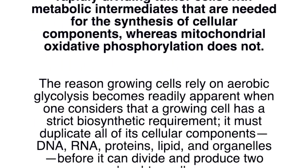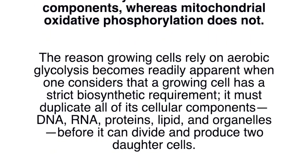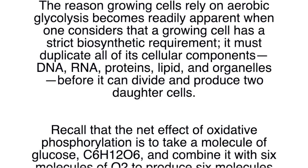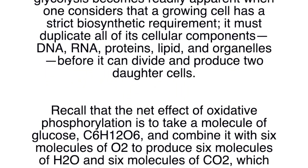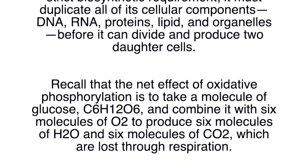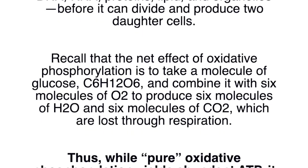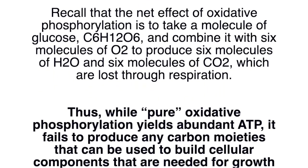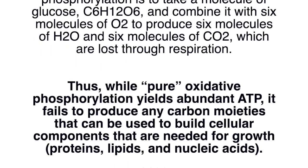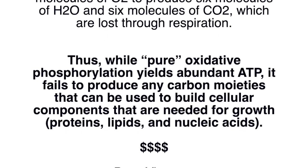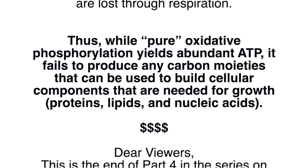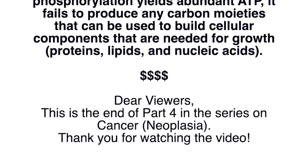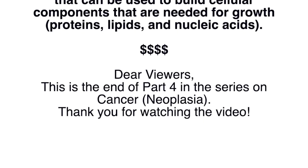The reason growing cells rely on aerobic glycolysis becomes readily apparent when one considers that a growing cell has a strict biosynthetic requirement: it must duplicate all of its cellular components — DNA, RNA, proteins, lipids, and organelles — before it can divide and produce two daughter cells. The net effect of oxidative phosphorylation is to take a molecule of glucose and combine it with six molecules of oxygen to produce six molecules of water and six molecules of carbon dioxide, which are lost through respiration. Thus, while pure oxidative phosphorylation yields abundant ATP, it fails to produce any carbon moieties that can be used to build cellular components needed for growth — that is, manufacture of proteins, lipids, and nucleic acids.